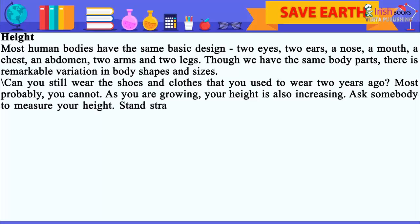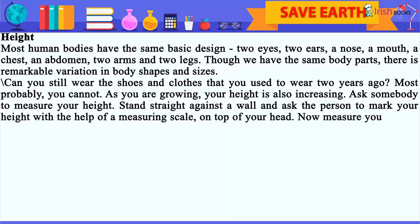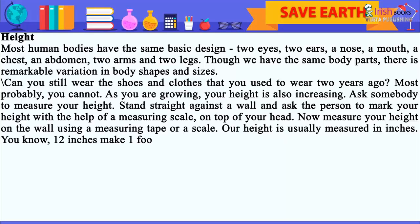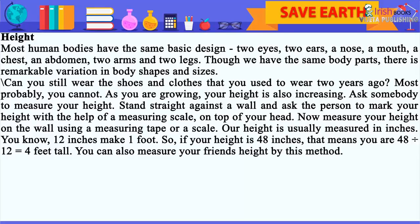Stand straight against a wall and ask someone to mark your height with the help of a measuring scale on top of your head. Now measure your height on the wall using a measuring tape or a scale. Height is usually measured in inches — you know 12 inches make 1 foot. So if your height is 48 inches, that means you are 48 divided by 12, equal to 4 feet tall. You can also measure your friend's height by this method.